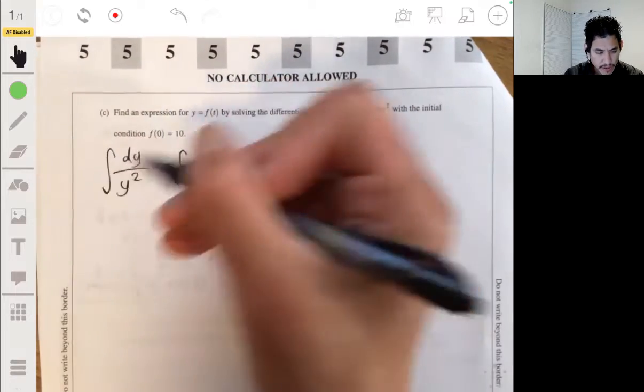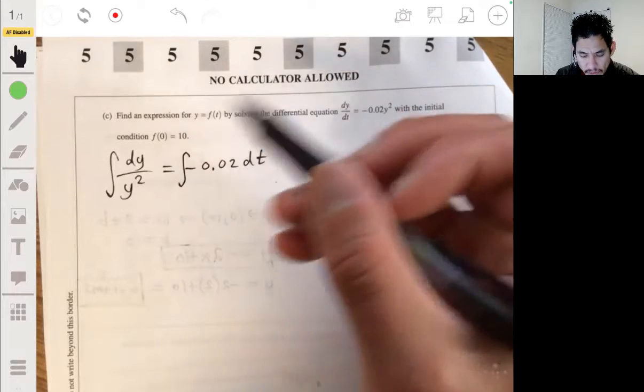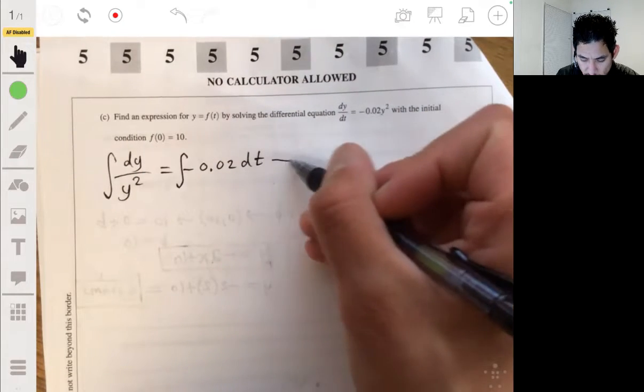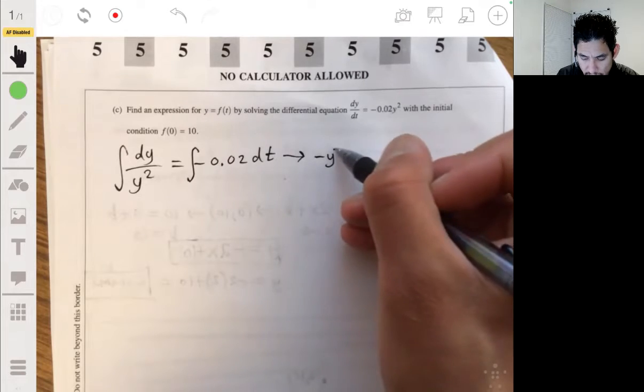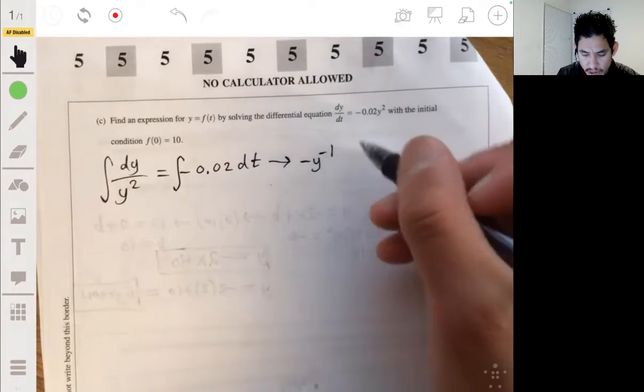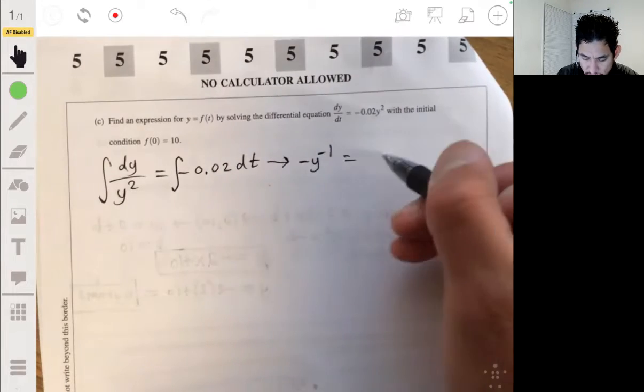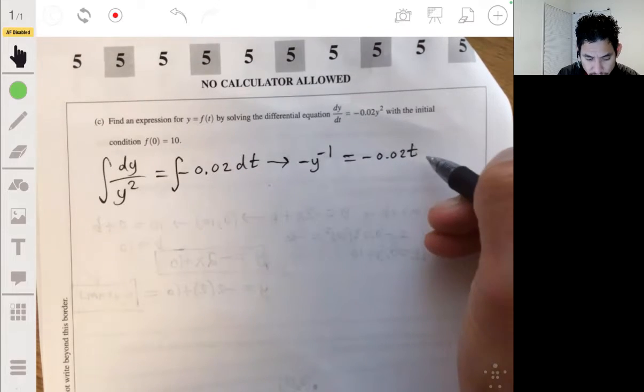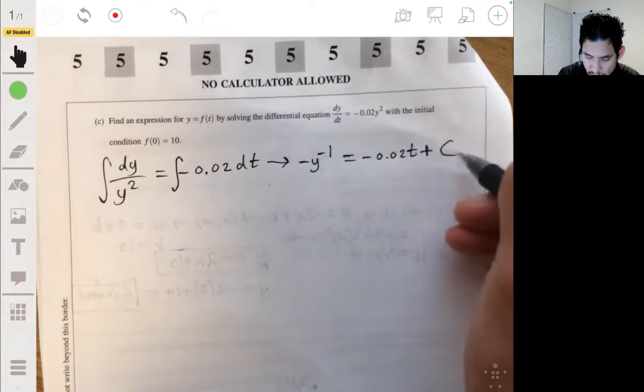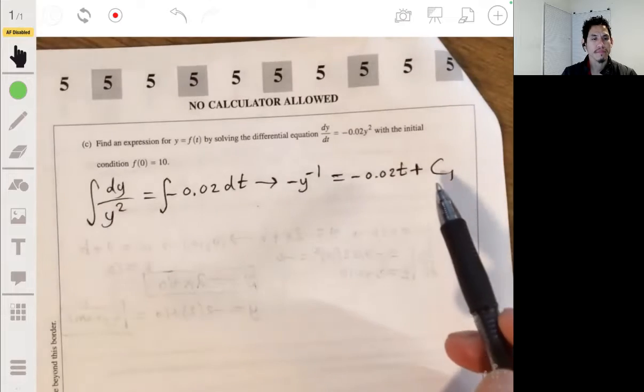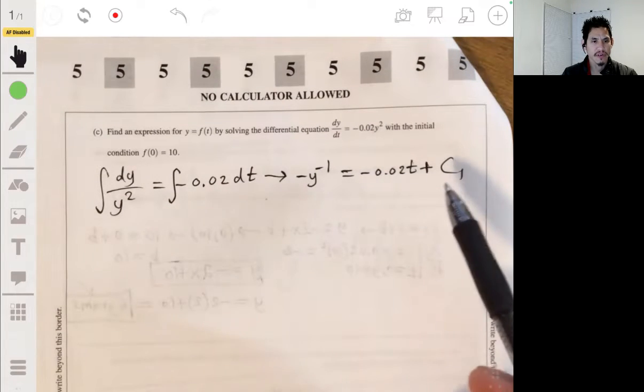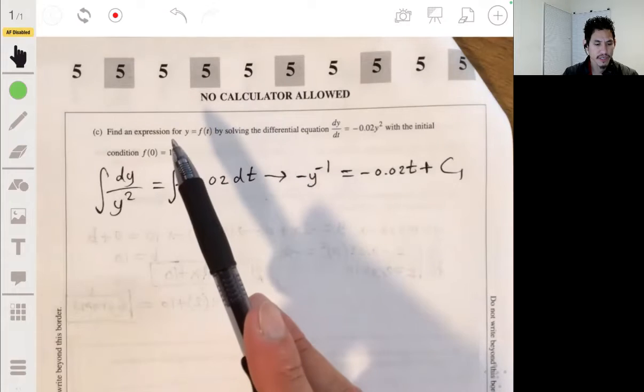Now we have to integrate each side. The left is just y to the negative 2 power. So using the reverse power rule, this will become negative y to the negative 1 when we integrate it. And the right side will become negative 0.02t plus a constant c1.